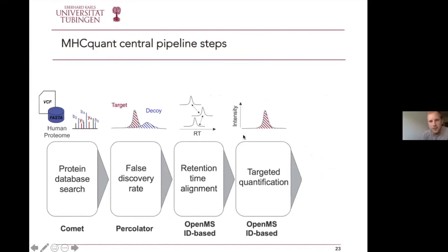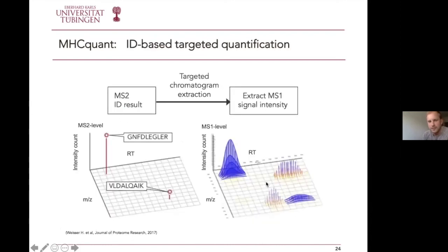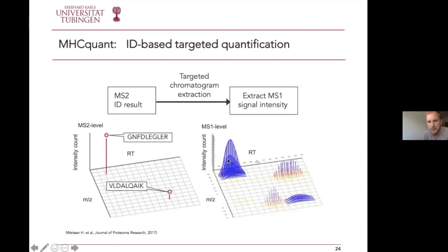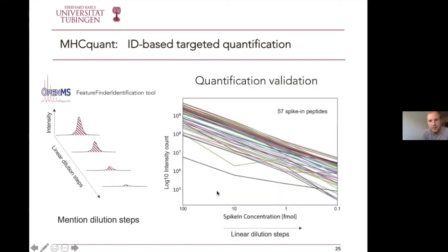Now we get to the part where MHC Quant gets its name from 'Quant' — quantification. Every peptide is associated with a quantity, carried out using a targeted chromatogram extraction approach. Each peptide identification is located not only at the MS2 level but also at the MS1 level, and the corresponding chromatograms are integrated. The sum of the signal intensity — the area under the curve — represents a quantity that can be compared. We verified this in the lab using 57 spiked peptides diluted in a linear series, confirming a linear decay in signal intensity.